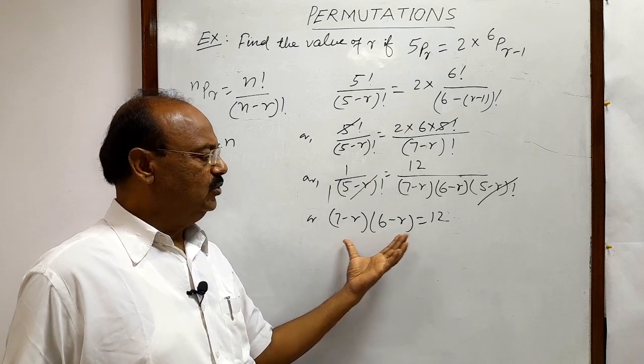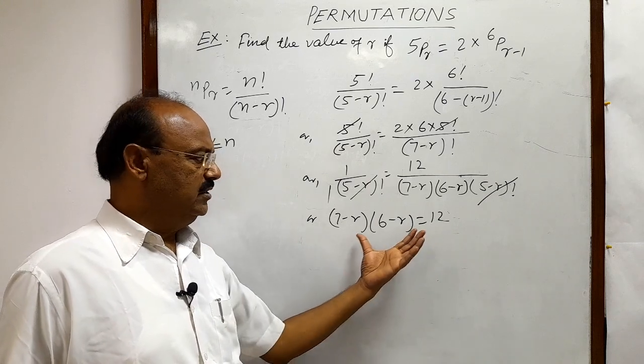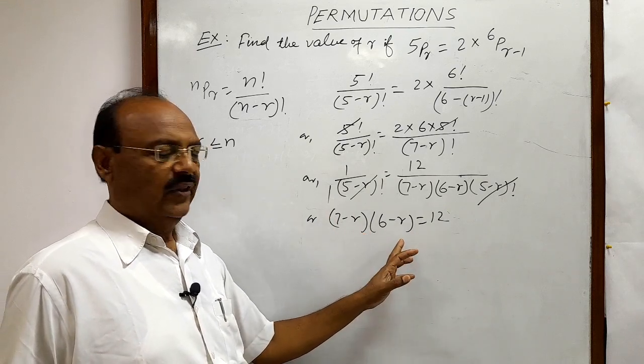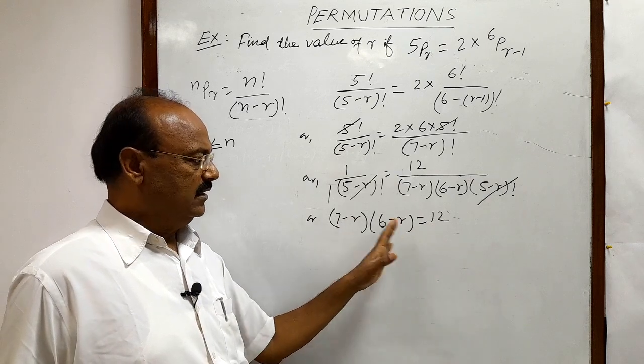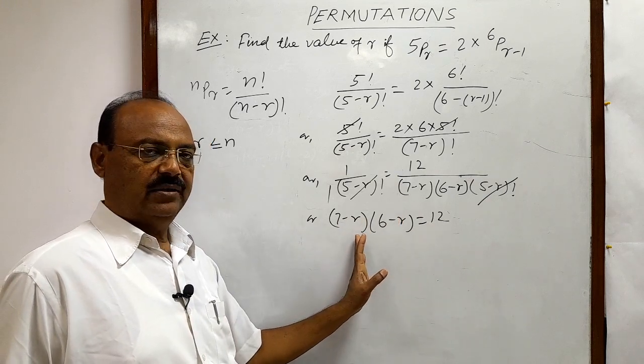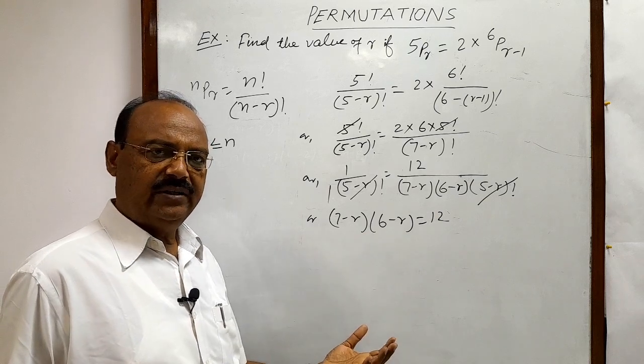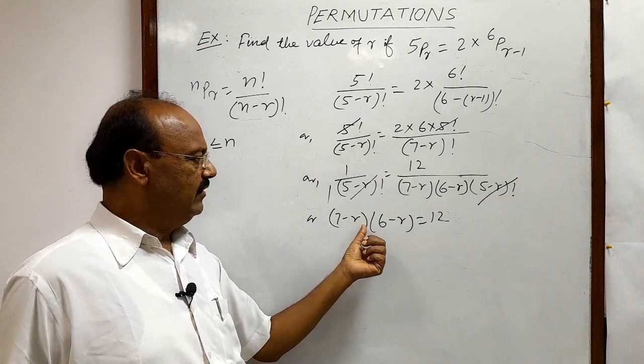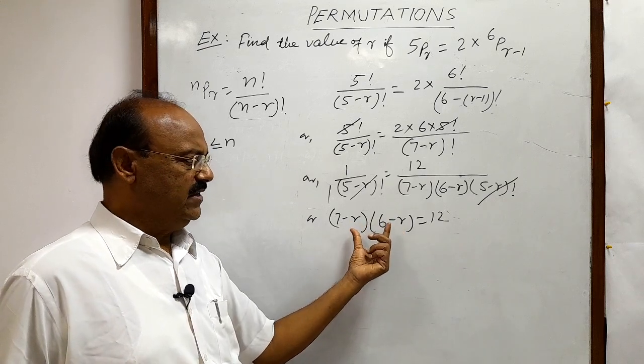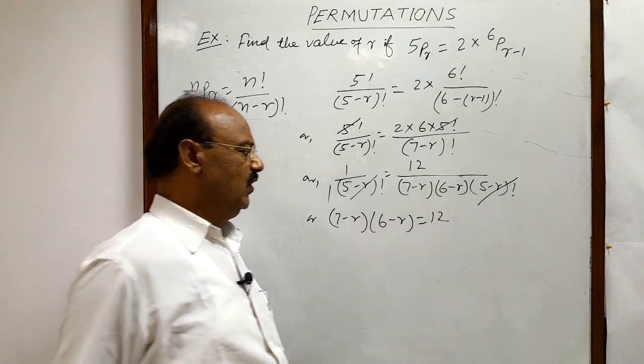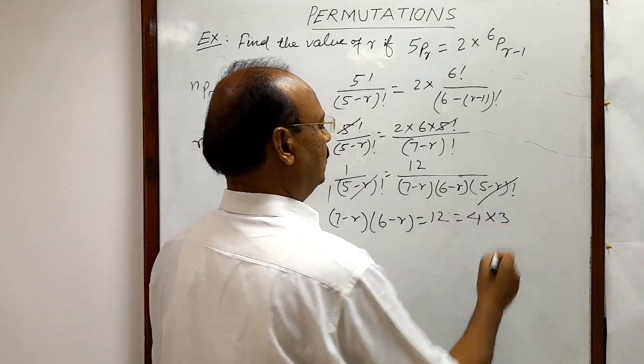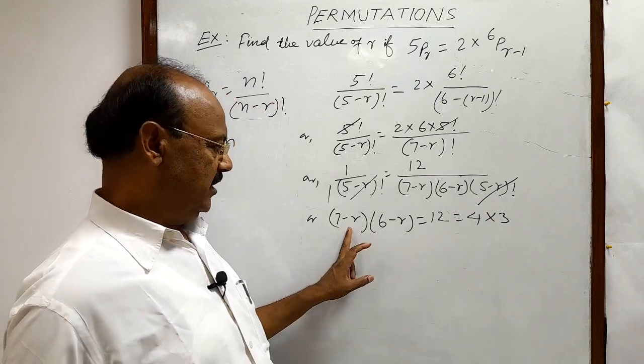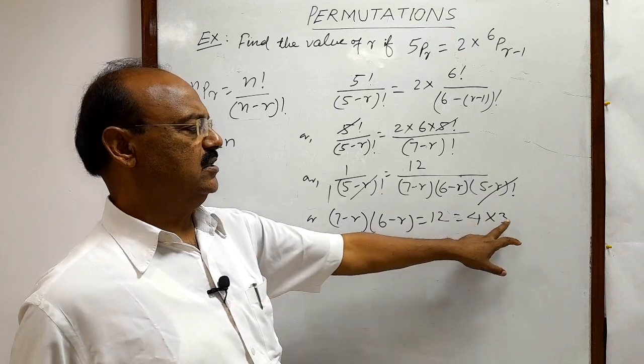And we are having 2 options, 2 different methods for solving this equation. First of all we will multiply these 2 factors and we will get a quadratic equation. And after factorizing and solving the quadratic equation we will get the value of r. But there is one very simple method, because this is a product of 2 consecutive natural numbers. This is 7 minus r, this is 6 minus r, 2 consecutive natural numbers. So this 12 can also be written as 4 into 3, product of 2 consecutive natural numbers. This is the greater number, this is the smaller number. Similarly, this is the greater number, this is the smaller number.